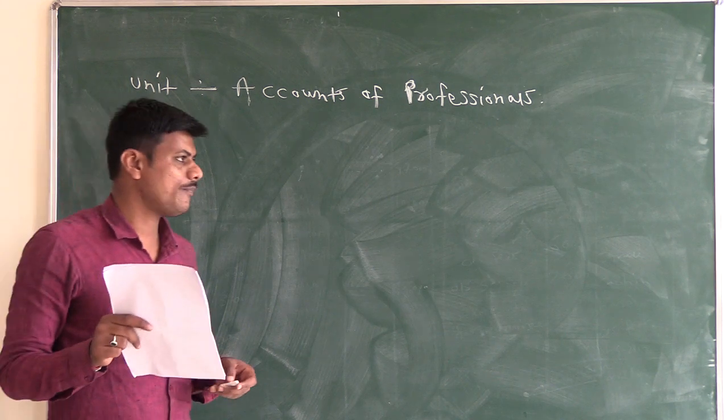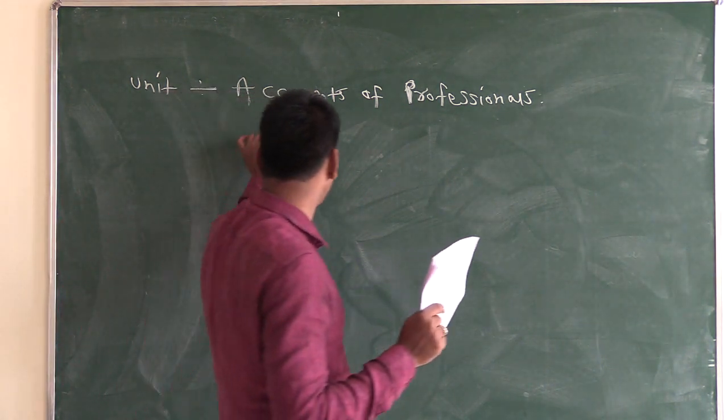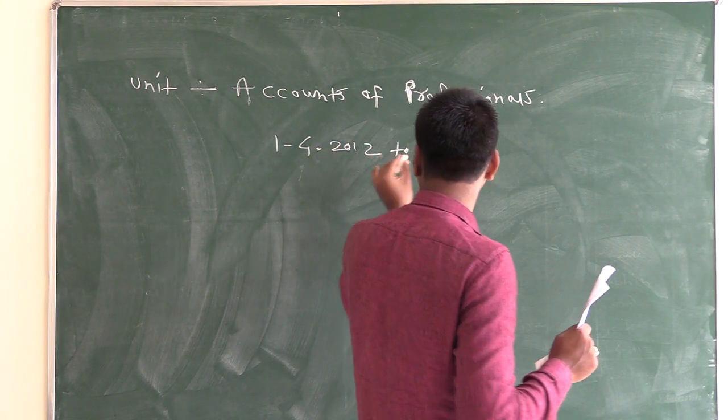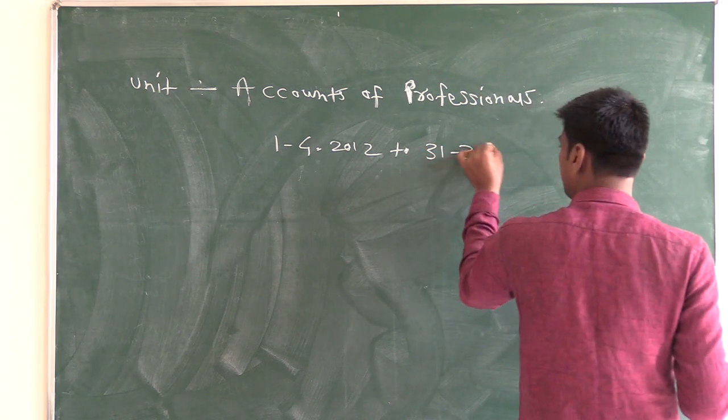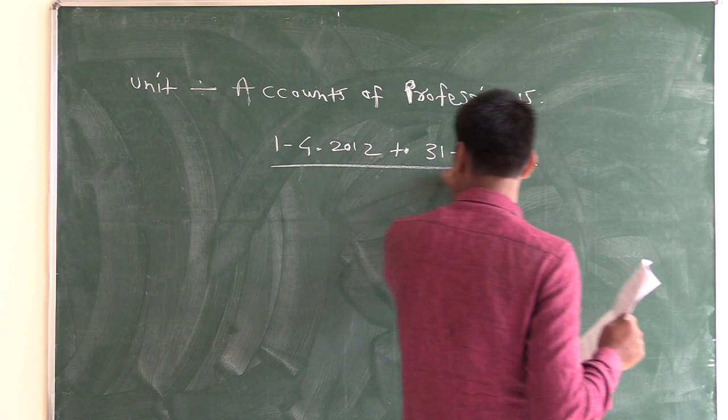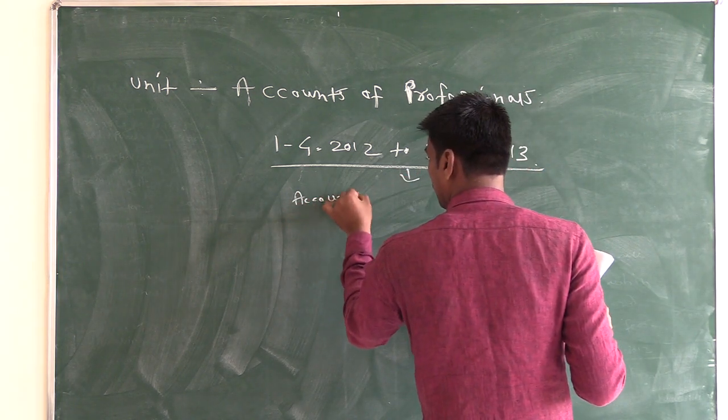We will tell you that 1st April 2012, when accounting started, the accounting year started. 1st April 2012 to 31st March 2013 is our accounting year. That is called the accounting year.